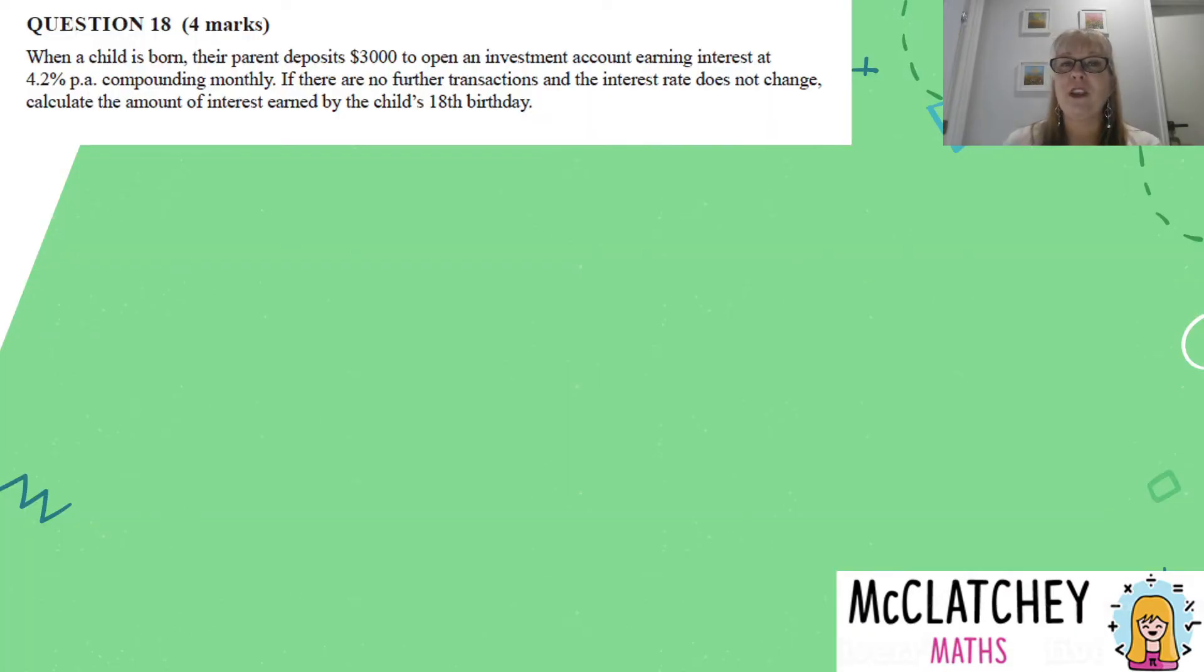Let's get into our first of the three questions. It's question 18 and it's worth four marks. When a child is born, their parent deposits $3,000 to open an investment account earning interest at 4.2% per annum, compounding monthly. If there are no further transactions and the interest rate does not change, calculate the amount of interest earned by the child's 18th birthday. We've got a lot going on in this particular question so we need to read this really carefully and see if we can unpack what kind of formula we're going to need from our formula sheet.